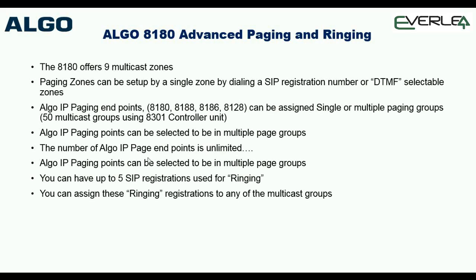In your sales you might sell one or two units, but in a larger deployment this is a full-blown solution for management, control, and announcements. The IP paging endpoints can be placed in multiple paging groups — e.g. a unit can be in paging groups 3, 5, and 6 simultaneously. You just tick those options in the unit and that unit is across those groups.